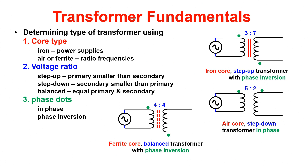The next fundamental is the voltage ratio — there are three types. A step-up transformer increases the voltage on the secondary. A step-down decreases the voltage on the secondary. A balanced transformer has equal primary and secondary voltages. Later in the course, phase inversion is used to develop voltage in the circuit. Phase inversion is represented by phase dots. If both dots are on the top of the primary and secondary, they are in phase. If one dot is on top of the primary and the other is on the bottom of the secondary, the transformer has phase inversion.